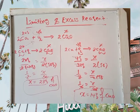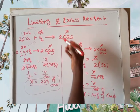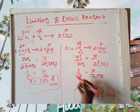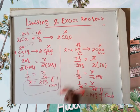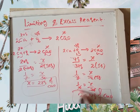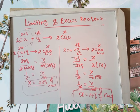The mass of product produced depends on the amount of limiting reagent. Since oxygen is the limiting reagent, the answer is 14 grams of calcium oxide will be produced. Thank you.